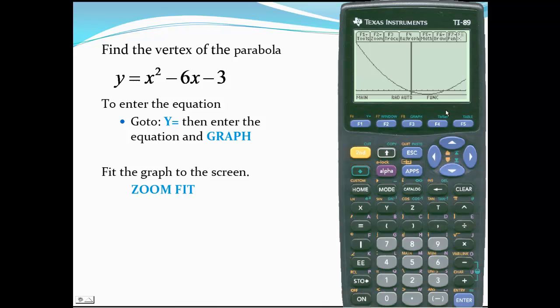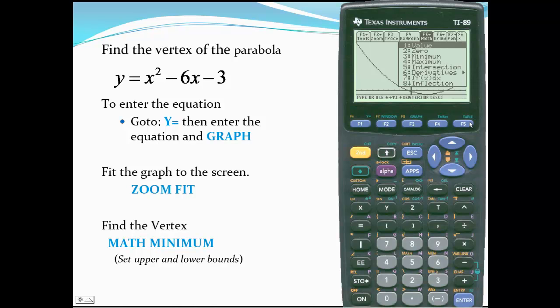Now we'll calculate the vertex. We'll enter the math option, which is F5. The graph appears to be the graph of a minimum, so we'll select number 3.